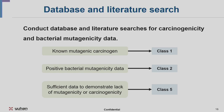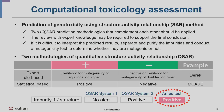Literature and database searches need to be conducted to find carcinogenicity and bacterial mutagenicity data. A known mutagenic carcinogen means Class 1. Positive bacterial mutagenicity data means Class 2. Sufficient data demonstrating lack of mutagenicity or carcinogenicity becomes Class 5.